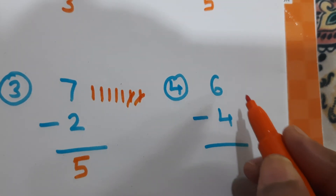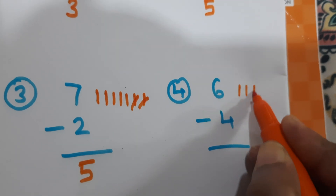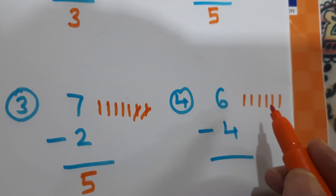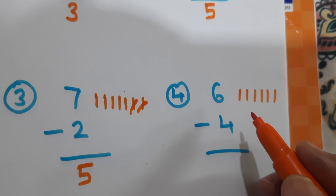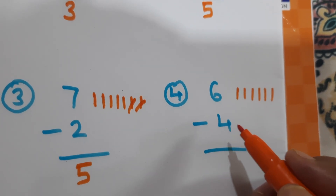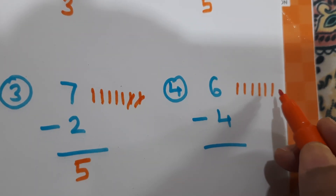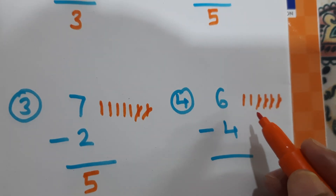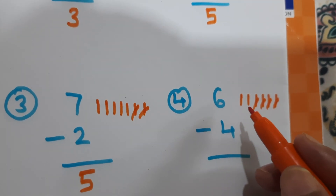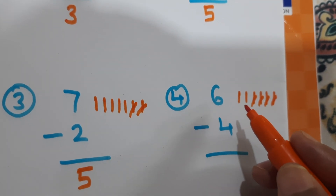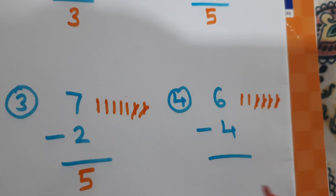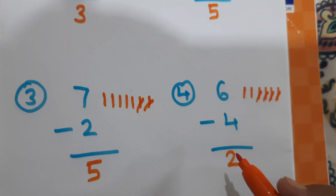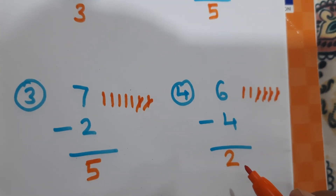6 minus 4. 1, 2, 3, 4, 5, 6. We cut how many lines? 4. 1, 2, 3, 4. How many lines are remaining? 1, 2. So, answer is 2. 6 minus 4, answer is 2.